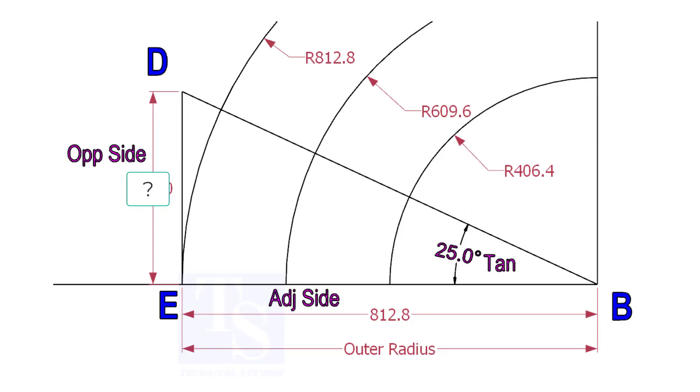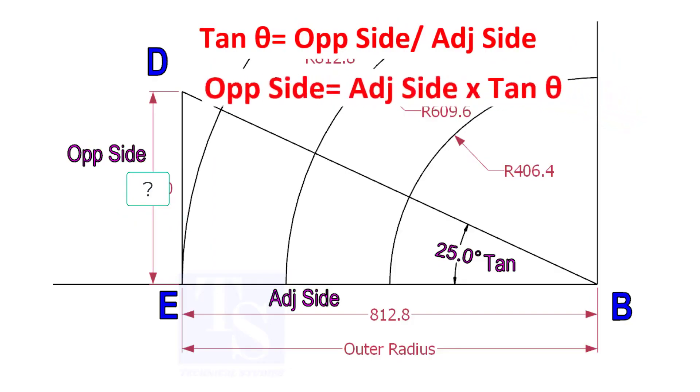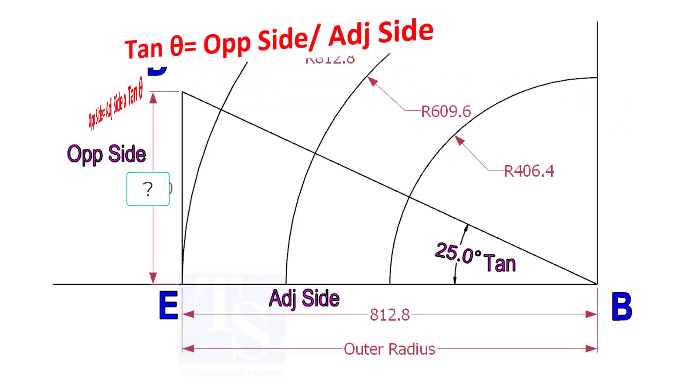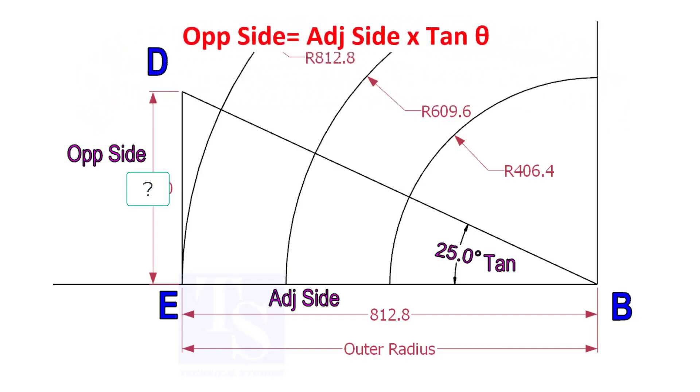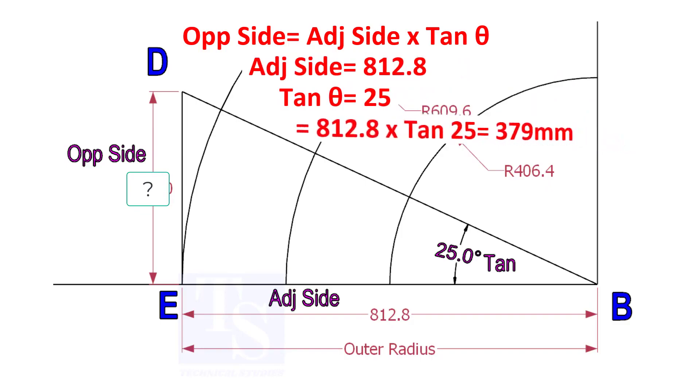To draw the line DB, we need to know the length of the line ED. To calculate ED, we need to apply the formula: tan theta equals opposite side divided by adjacent side. Opposite side equals adjacent side multiplied by tan theta. 812.8 into tan 25 equals 379 millimeters.